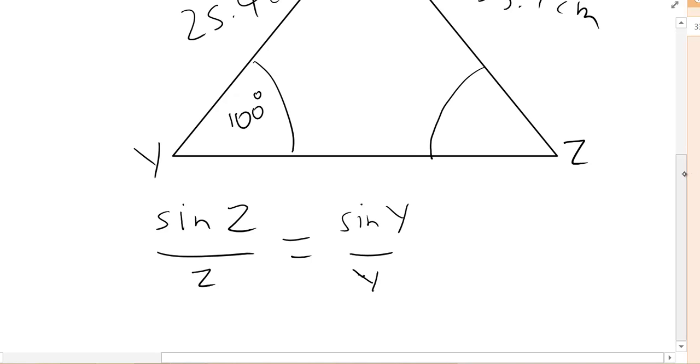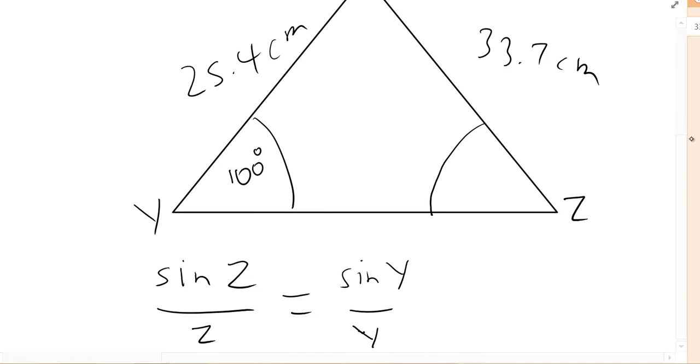And when we put the numbers into our equations we have sin z divided by 25.4 centimetres equals sin of 100 degrees divided by 33.7 centimetres.